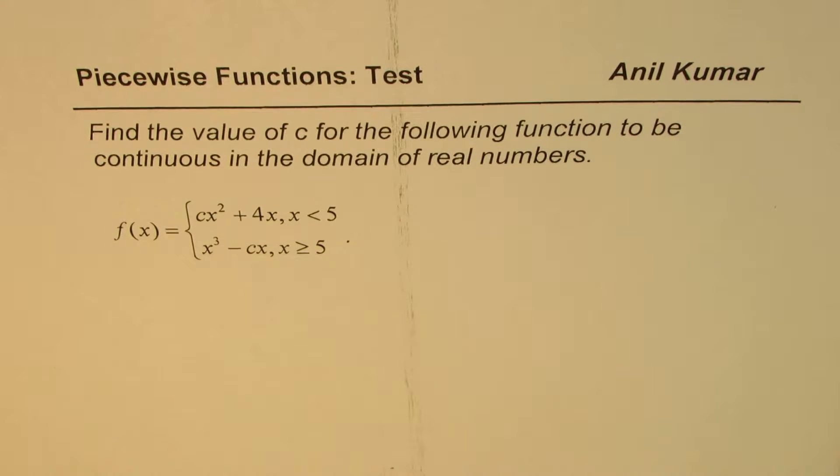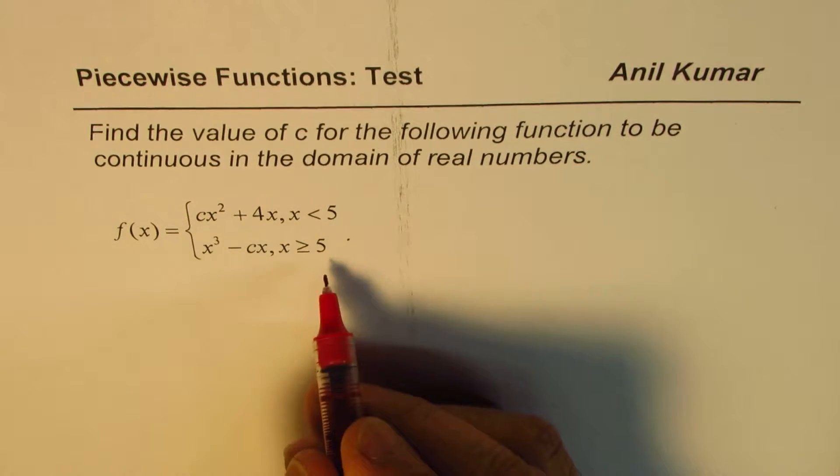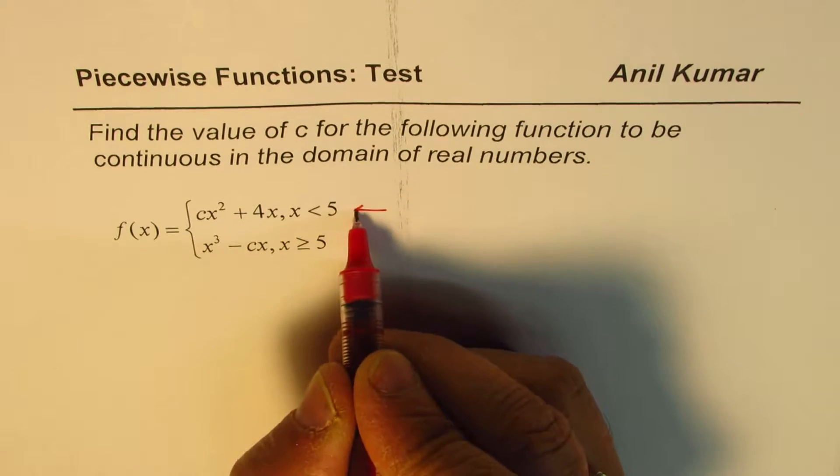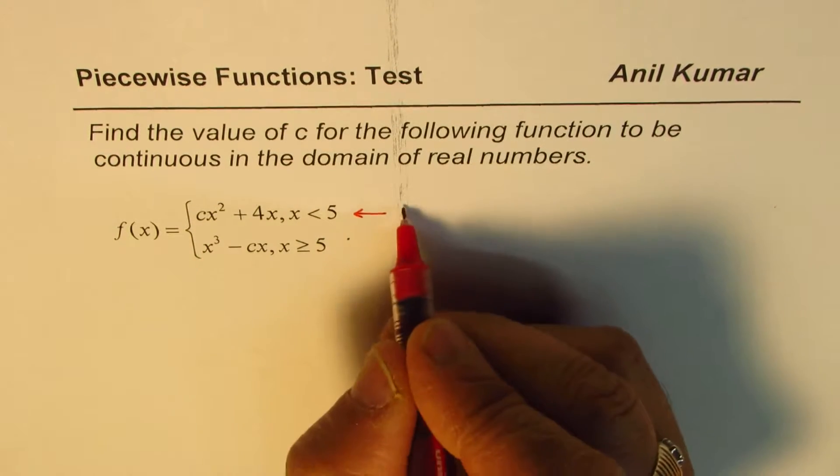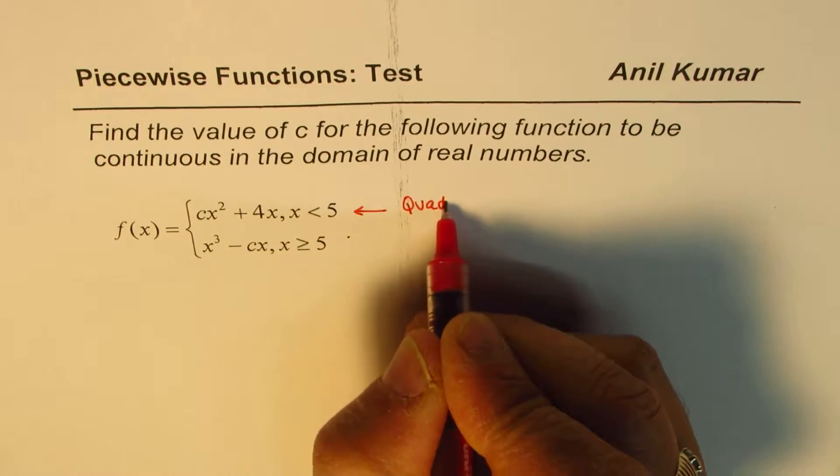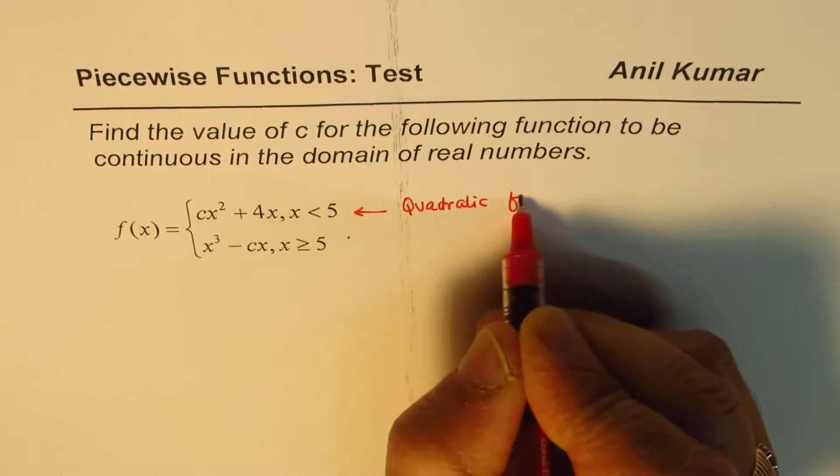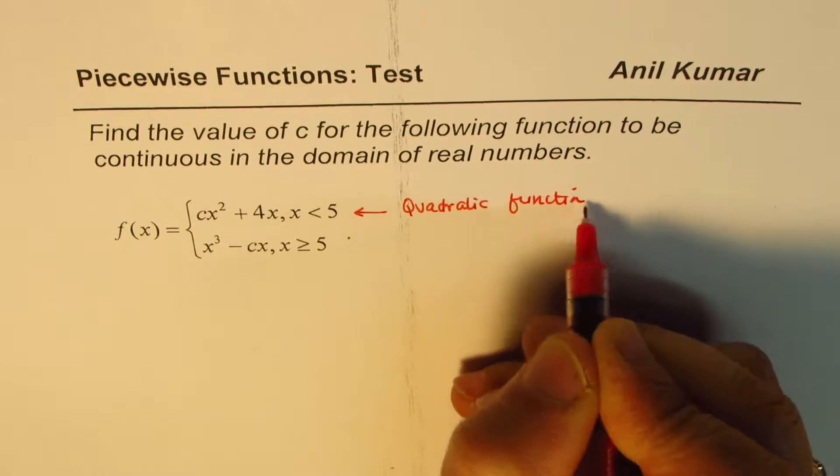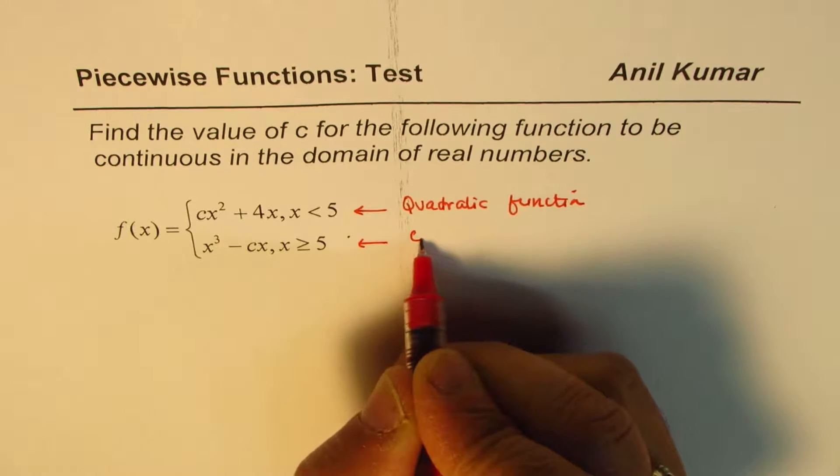In the piecewise functions, we have two functions here. This is a polynomial of degree 2, so we say it's a quadratic function. And this one is a cubic function, right?